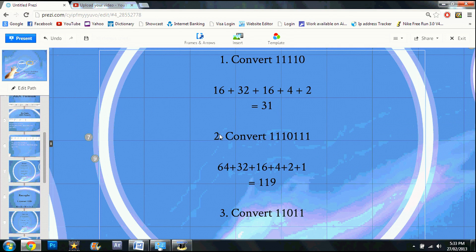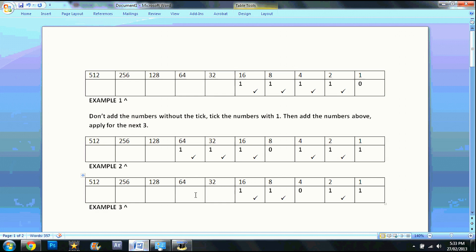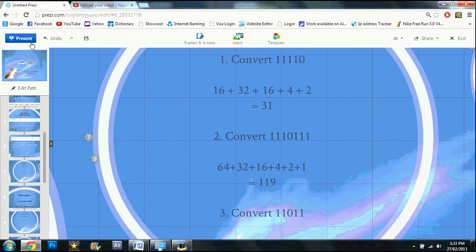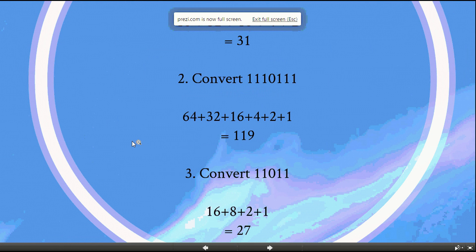Convert 11011. Example 3. First put the number in 11011. Tick the numbers with a 1 and then add the above number here. So 1 plus 2 plus 8 plus 16. That should give you 27.